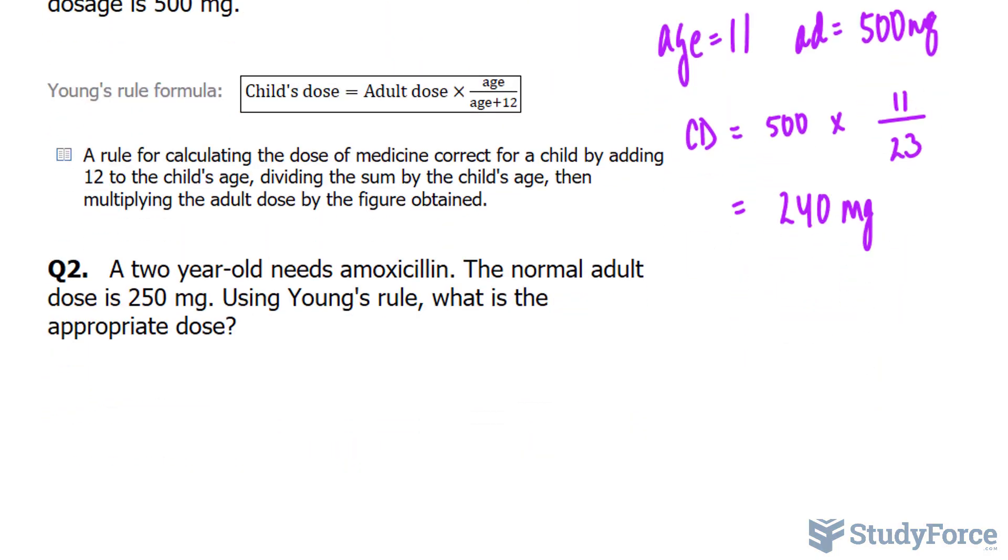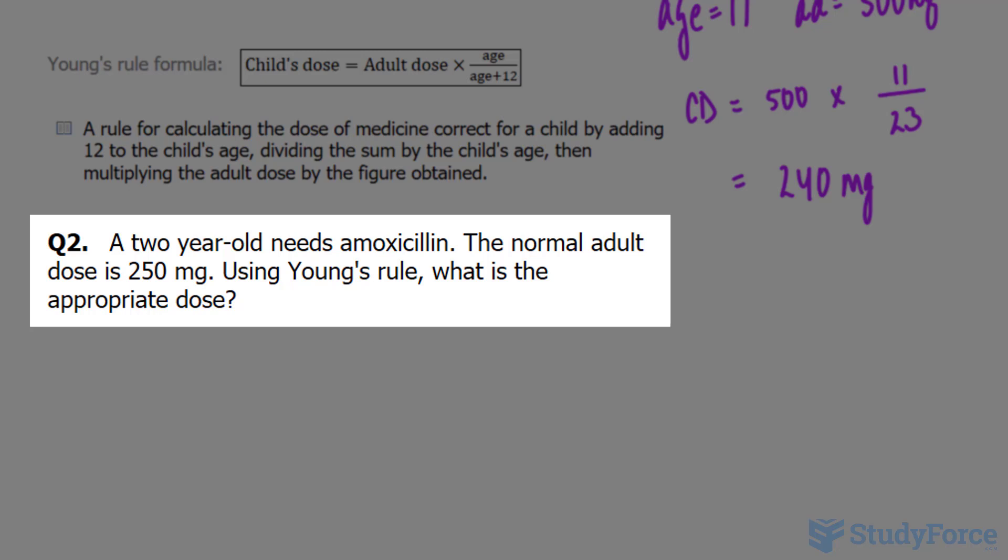Let's try one more example. A 2-year-old needs amoxicillin. The normal adult dose is 250 mg. Using Young's rule, what is the appropriate dose?